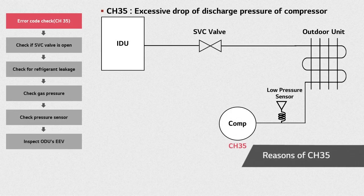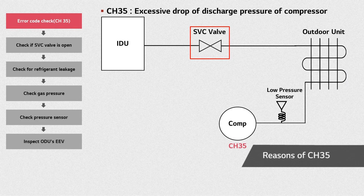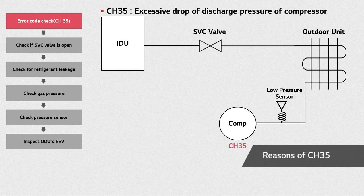CH35 is an error related to a drop of the compressor's discharge low pressure. Low pressure drop will cause the compressor to remain in off state. Common causes of this error include service valve blockage, lack of refrigerant, defects in the low pressure sensor, a malfunction of the IDU's or ODU's EEVs, etc.